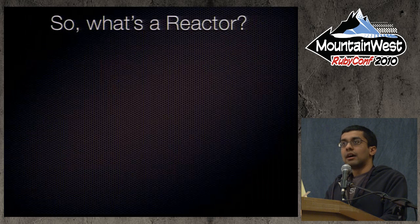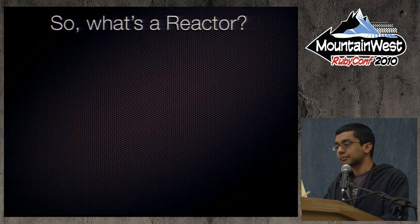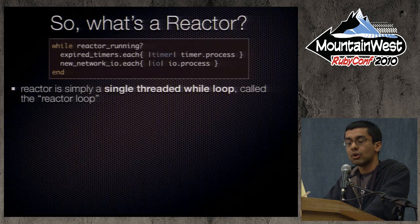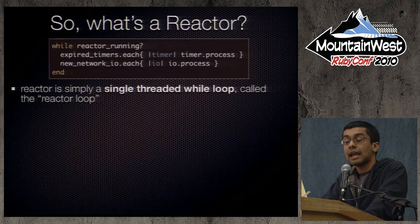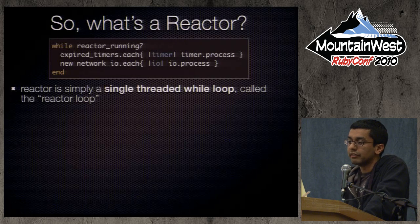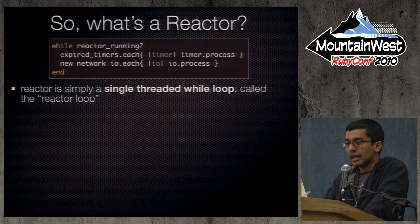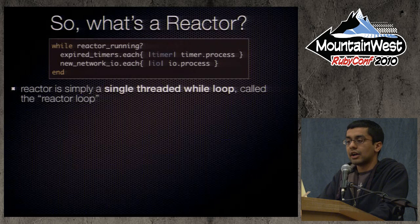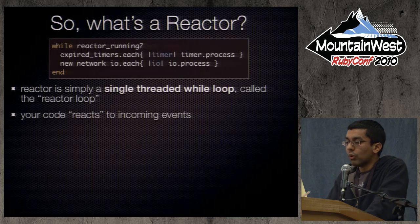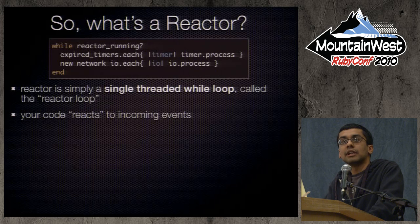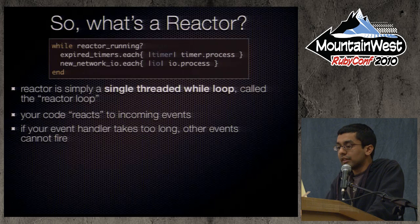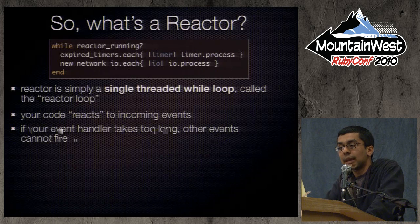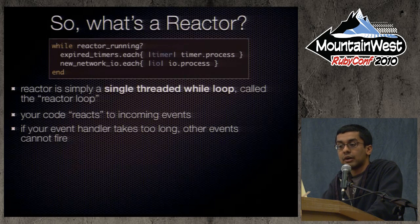You might be wondering: what is a reactor? A reactor, very simply put, is just a single-threaded while loop — commonly referred to as the reactor loop. Here's some Ruby pseudocode describing a very simple reactor: as long as the reactor is running, you keep iterating. The reactor has timers — if there are expired timers, you process them; if there's new network I/O, you process that. Your code is simply reacting to incoming events. An important thing to notice: if you write code in your event handler that takes too long, that's going to impact when other events fire.